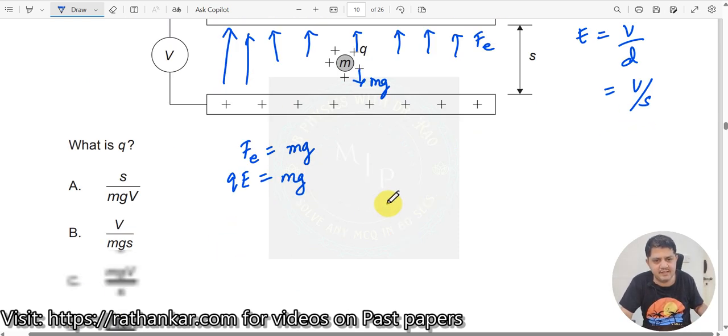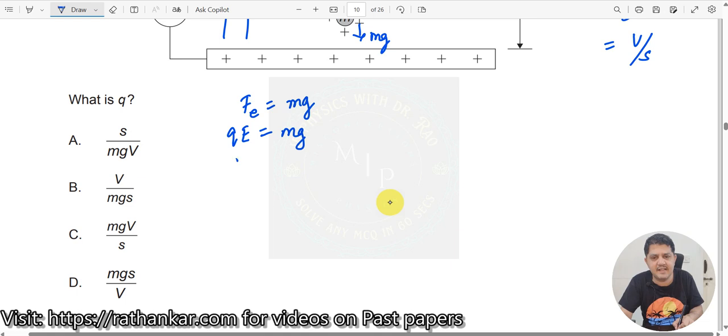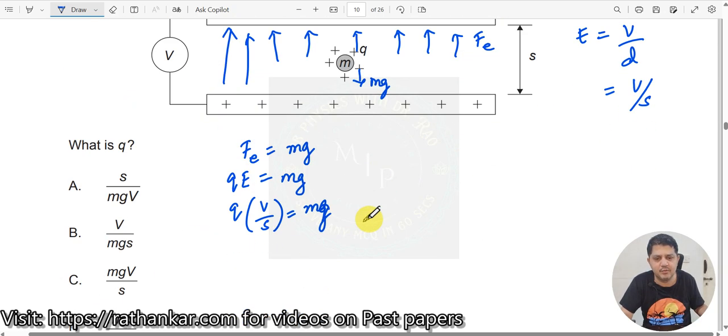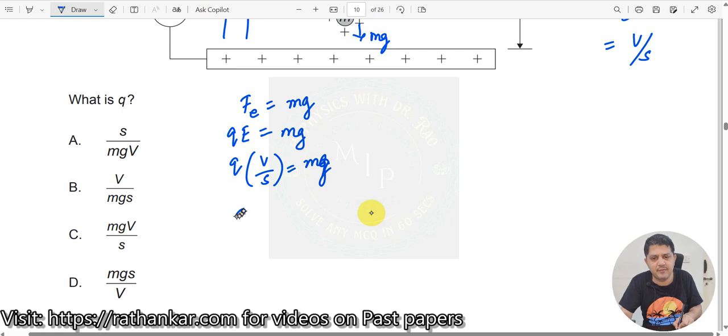I'll substitute this in this equation. Thus, I will write Q times V by S equals Mg. What do I need? What is Q? You need to find out the value of Q. Therefore, Q should equal Mg S divided by V. So this should be your answer: Mg S by V, answer is D.